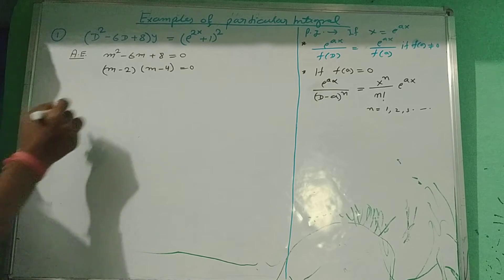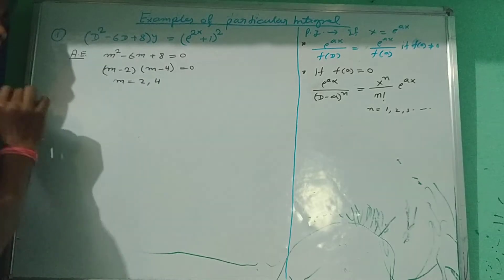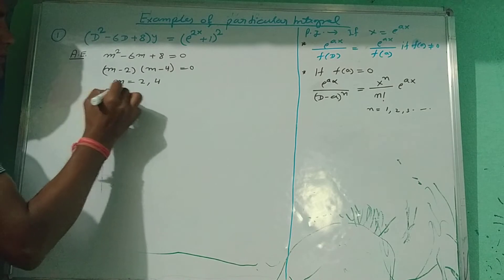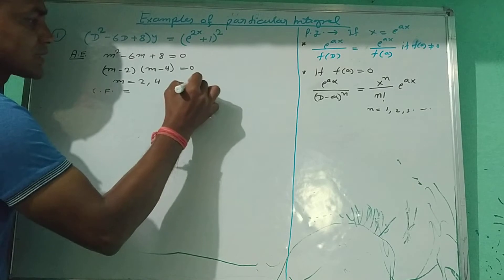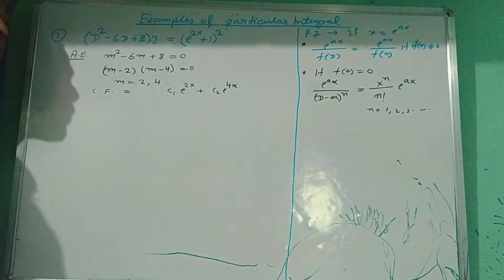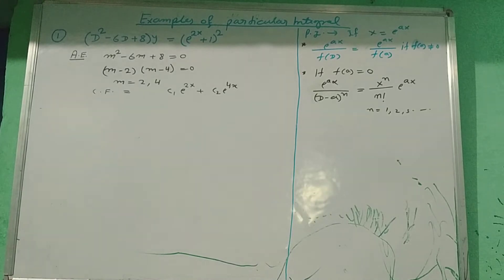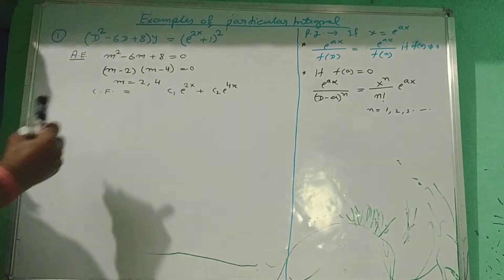The roots are m equal to 2 and 4. According to these roots, we can easily say that the complementary function of this question is c1·e^(2x) plus c2·e^(4x), because both the roots are distinct and real. So we can easily write the complementary function for distinct and real roots according to this process.